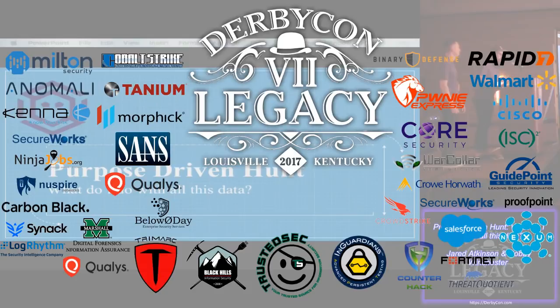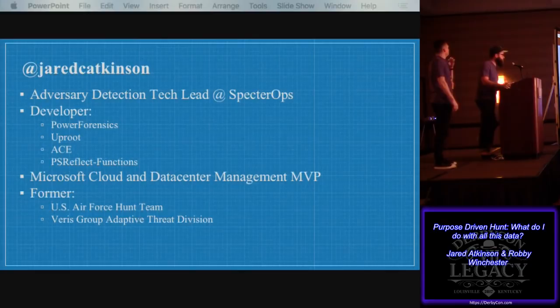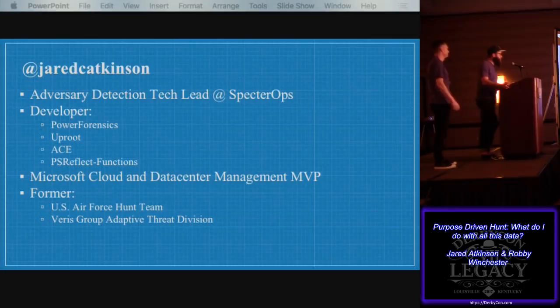We're going to talk about how to gather data, analyze it at scale, maybe with a little bit of thought behind it, with hypothesis generation for hunting. I'm Jared Atkinson. I'm the Adversary Detection Technical Lead at Specter Ops. I used to work for the U.S. Air Force, also as part of Veris Group's Adaptive Threat Division. I do a lot of development in my spare time, so I wrote Power Forensics, which is a C-sharp/PowerShell forensic framework. I also did Ace, which we released at Black Hat Arsenal this past year.